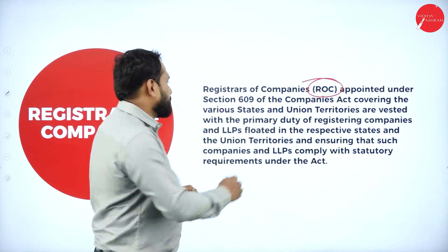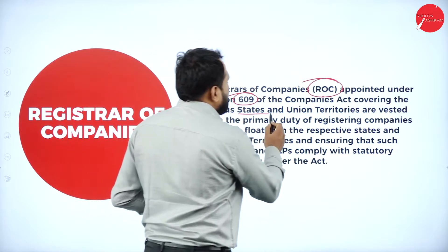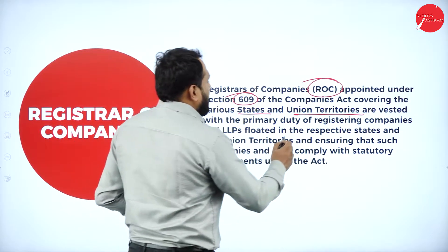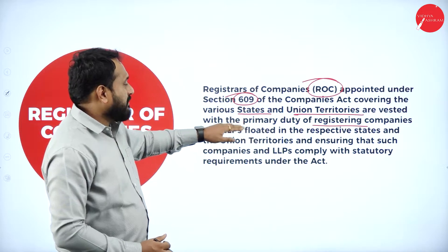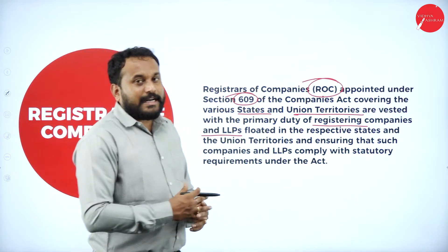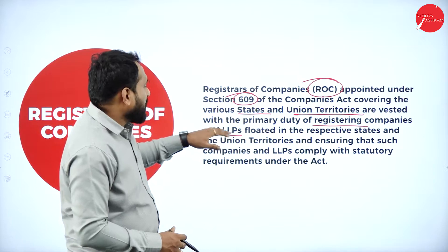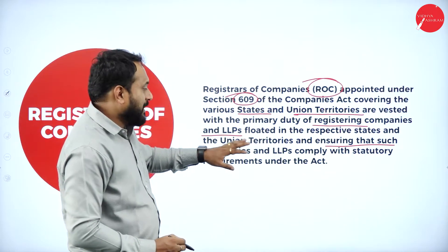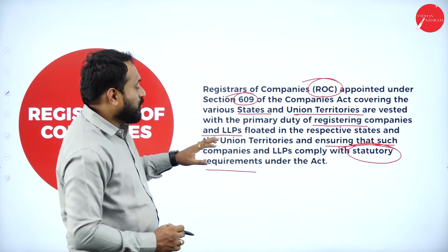The ROC is appointed under Section 609 of the Companies Act, covering various states and union territories, and is vested with the primary duty of registering companies and LLPs — that is, Limited Liability Partnerships — which also come under the Companies Act 2013, floated in the respective states and union territories. The ROC ensures that such companies and LLPs comply with statutory requirements before registration.